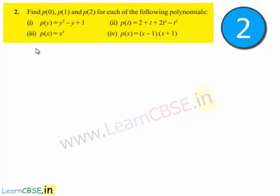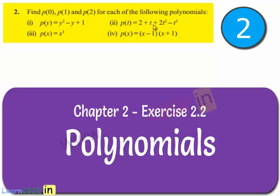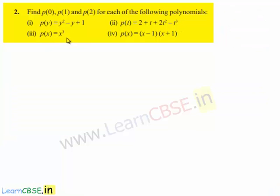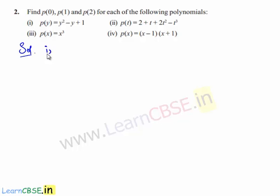Moving on to the second problem: find p(0), p(1), and p(2) for each of the following polynomials. We have been given 4 polynomials: p(y) equals y squared minus y plus 1; p(t) equals 2 plus t plus 2t squared minus t cubed; p(x) equals x cubed; and p(x) equals x minus 1 times x plus 1. The first part has the given polynomial p(y) equals y squared minus y plus 1.